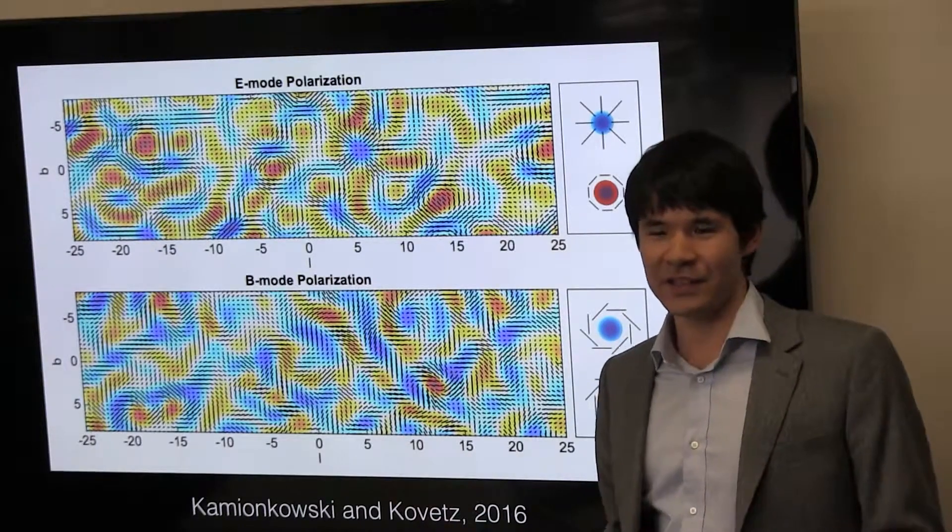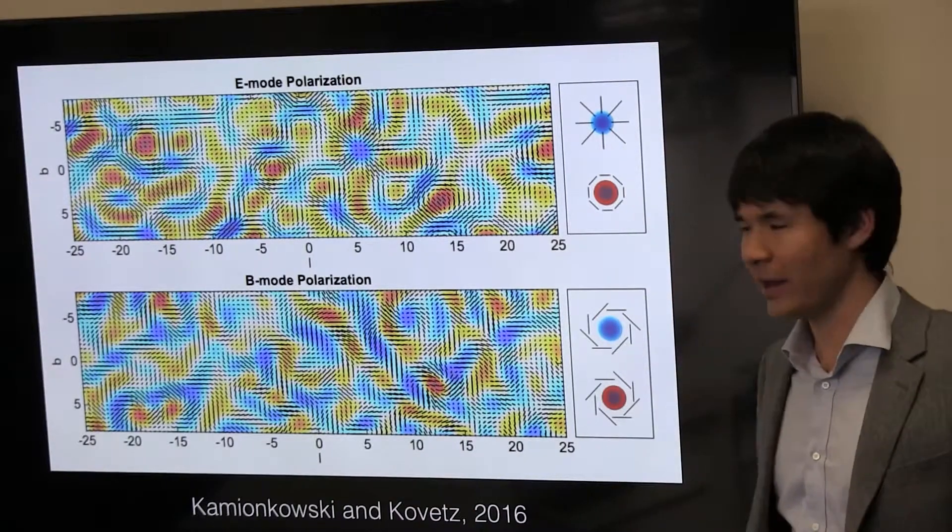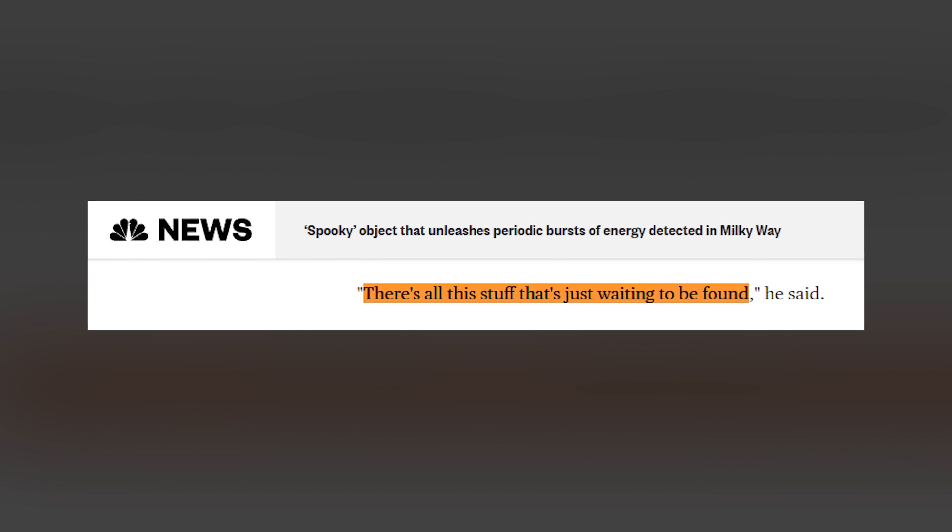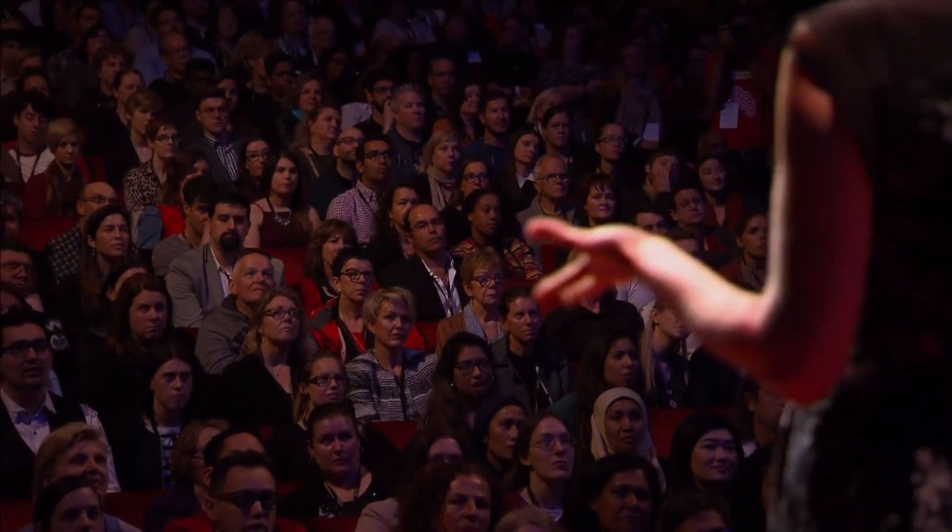That makes this new object an exciting discovery, Kiyoshi Masui, a physicist at the Massachusetts Institute of Technology, told NBC News. There's all this stuff that's just waiting to be found. Hurley Walker is monitoring the area where the object appeared using the Murchison Wide Field Array, the same telescope that first detected it.